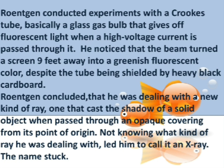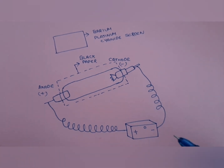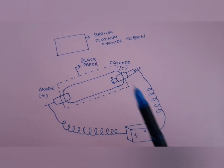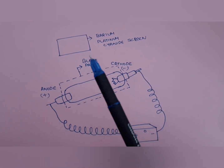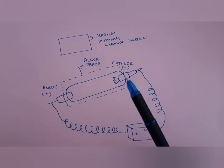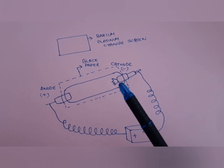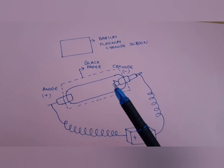In the year 1895, Wilhelm Conrad Röntgen conducted an experiment using a Crookes tube, which has a positive anode and negative cathode connected to an electric supply. He covered the tube with black paper and kept a barium platinum cyanide screen about nine feet away. The cathode was heated to a high temperature, and through the process of thermionic emission the electrons are ejected from the filament and come to the surface.